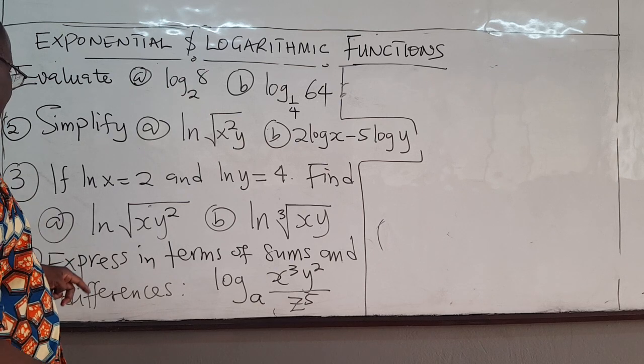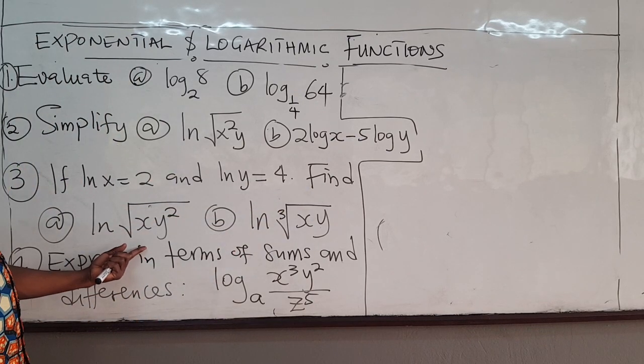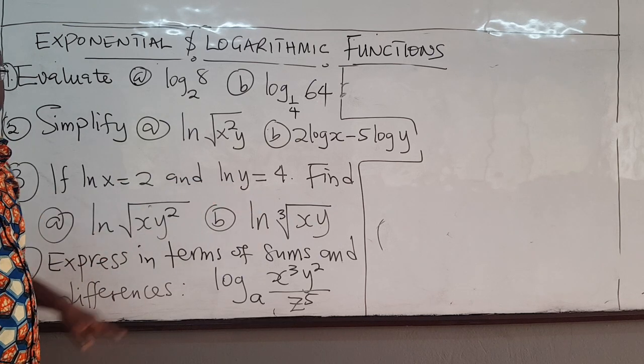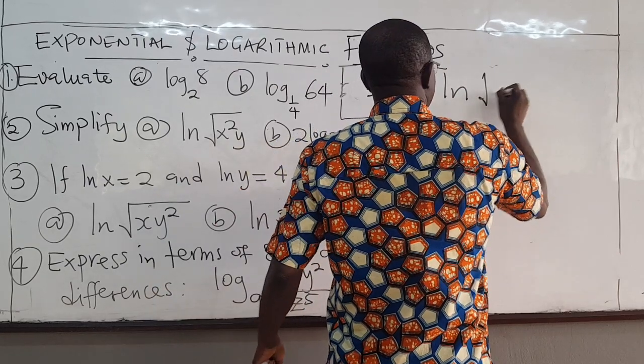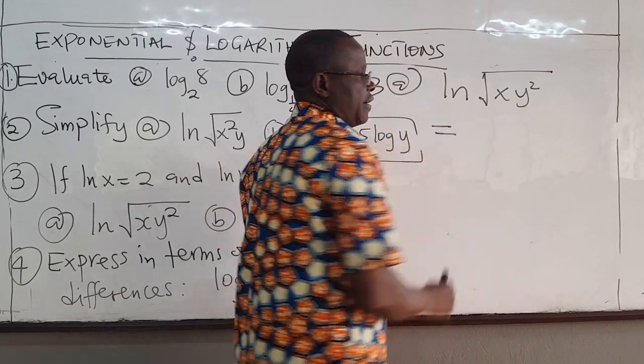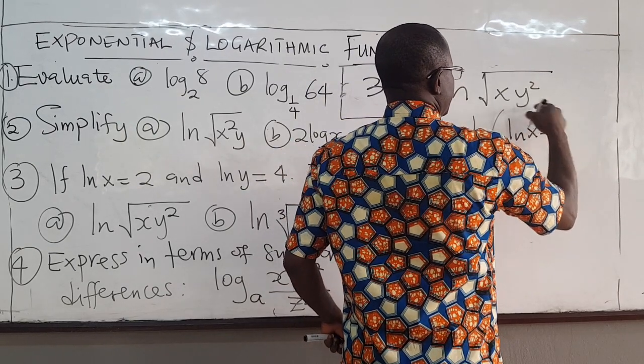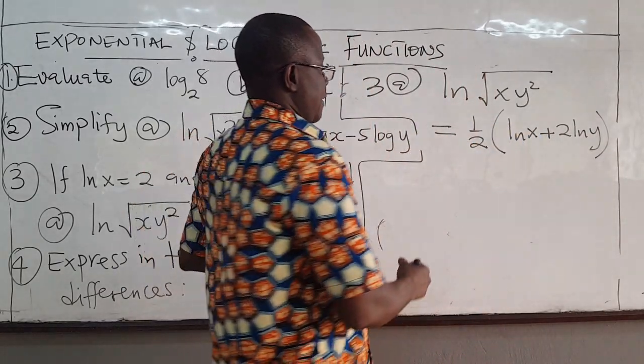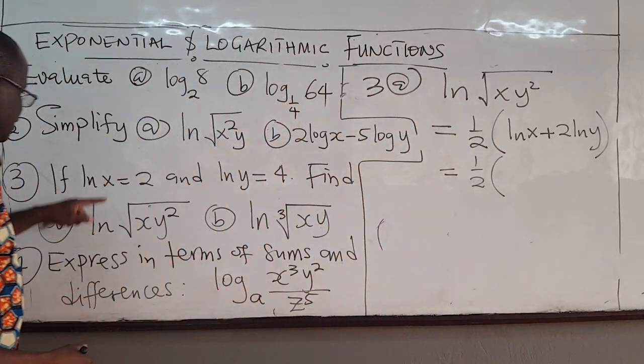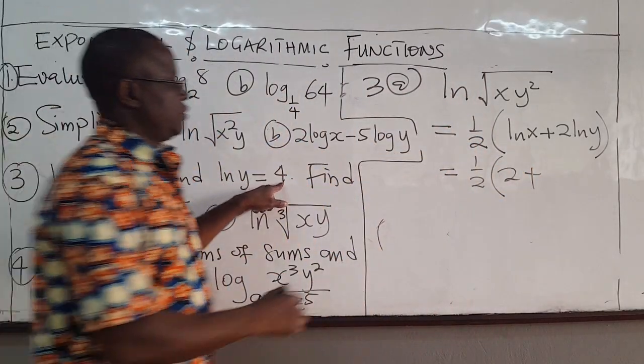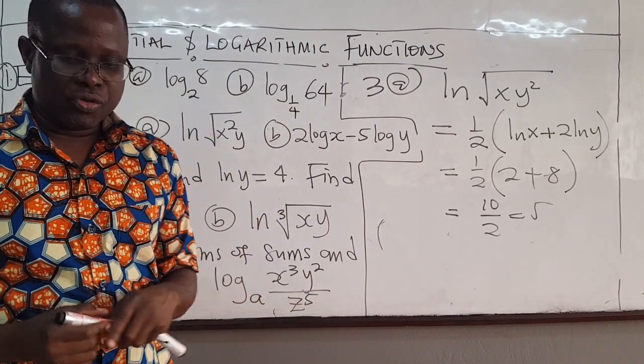We move on to question 3. Question 3 says ln x is 2 and ln y is 4. We want to find this. Alright? So you want to write this in such a way that you have ln x appearing and ln y as well. Then you can stick these numbers in. Okay? And compute the result. So question 3, A. Ln, ln square root xy squared. Square root, I'll be fast here. We've done a similar one already. This is 1/2, right? Into ln x plus 2 ln y. Okay? So that is 1/2. Ln, well, 1/2 ln x. We know what? Ln x is 2. Ln x is 2. Plus 2 ln y. Ln y is 4. 2 times 4 is 8. So 1/2. This is 10 divided by 2. It's equal to 5. So we get 5.